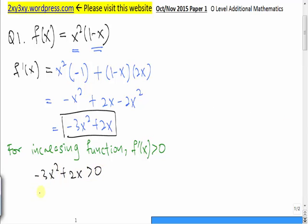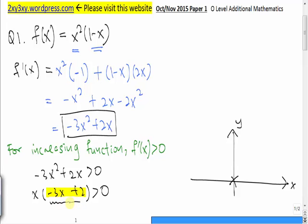Let's factorize this expression. To draw the quadratic graph, we have to find the value of x that crosses the x-axis. So one of the points is x equal to zero. The other point is we let this expression be zero and solve for x, x will be equal to two-thirds. Because the coefficient of x-square is a negative value, the shape of the quadratic graph will be a sad face.